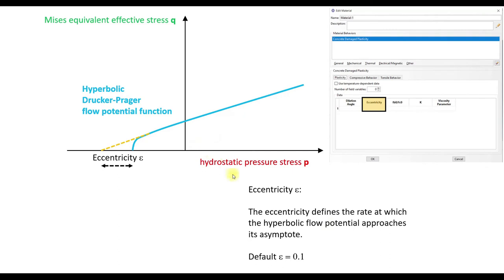Next we have the eccentricity. And the eccentricity value can be seen here. It basically defines the rate at which the hyperbolic flow function approaches its asymptote. And the default value is 0.1.